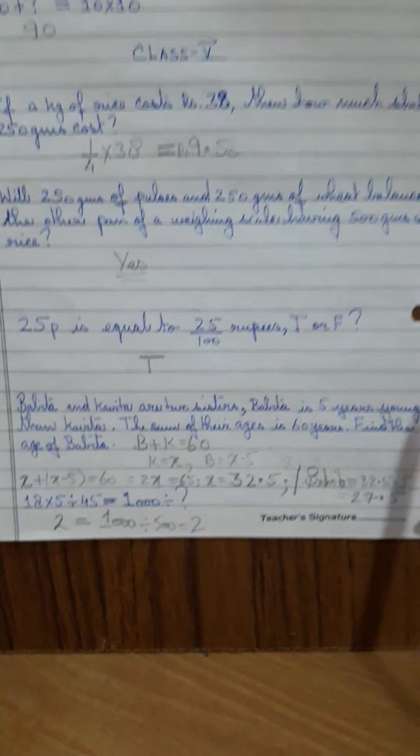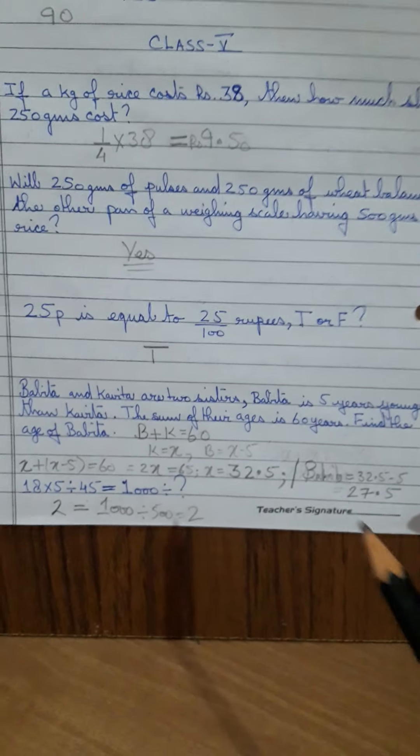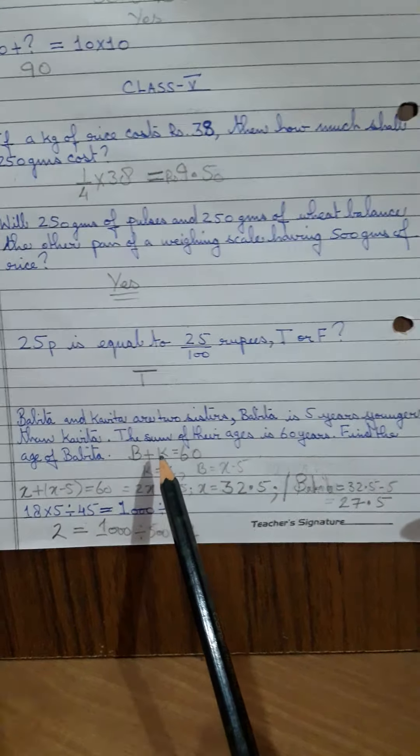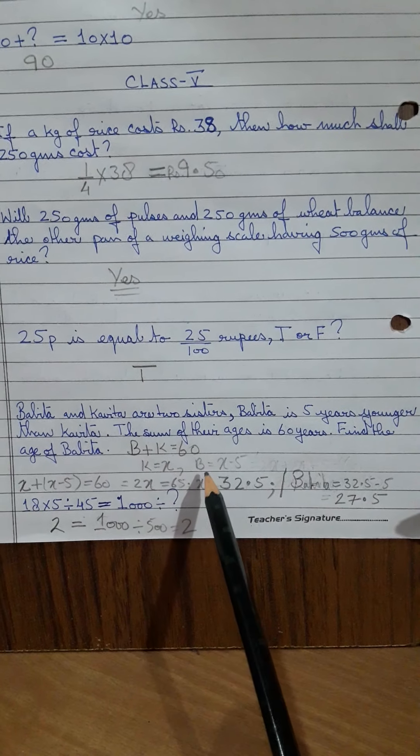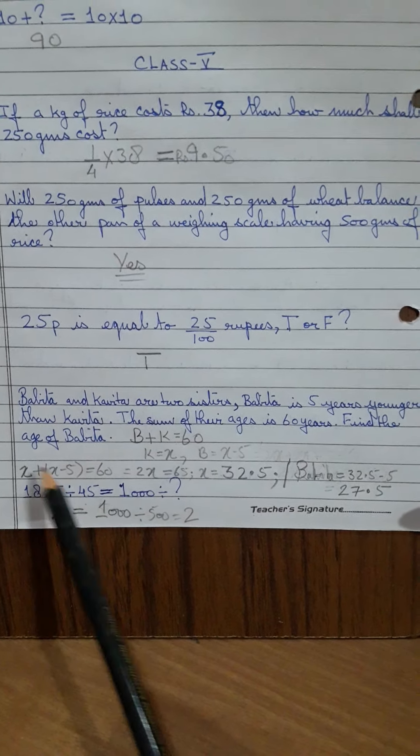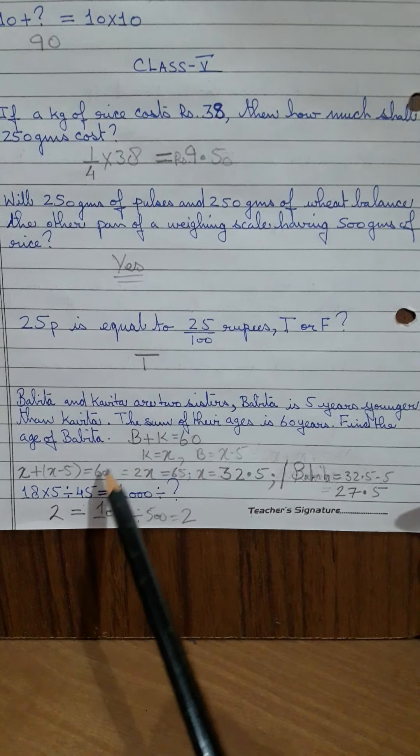Now, interesting sum. This Kavita, Babita. Babita plus Kavita, their ages are 60 years. So let Kavita's age be X and Babita's age is 5 years lesser, X minus 5. Do the equations. X plus X minus 5 is equal to 60.